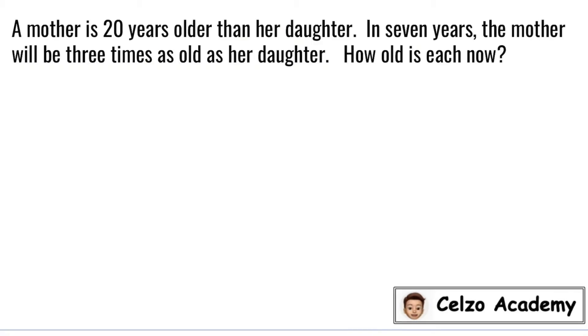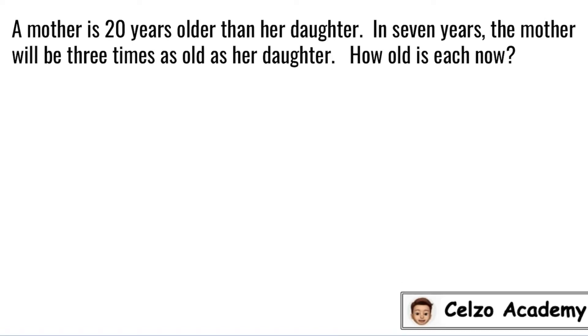Now let's go over the detailed explanation of this age problem. A mother is 20 years older than her daughter. In 7 years, the mother will be 3 times as old as her daughter. How old is each now?